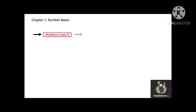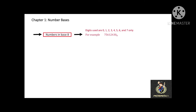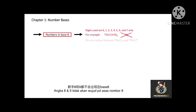And the last one, base 8. The digits used are 0, 1, 2, 3, 4, 5, 6, and 7 only. For example, 75612430 in base 8. And you won't see 8 or 9 in base 8 numbers.